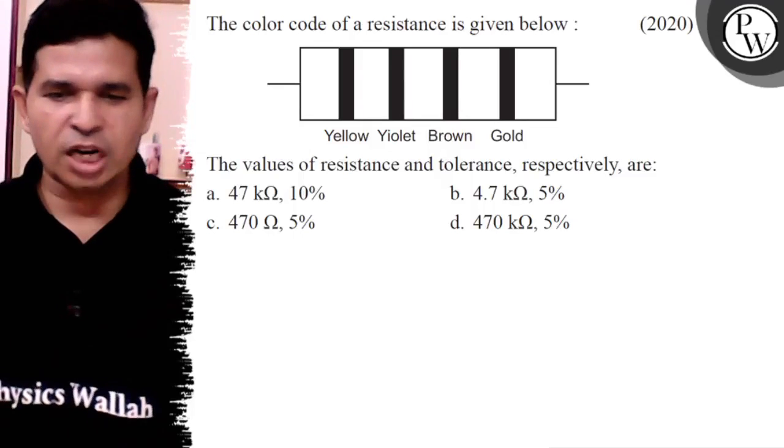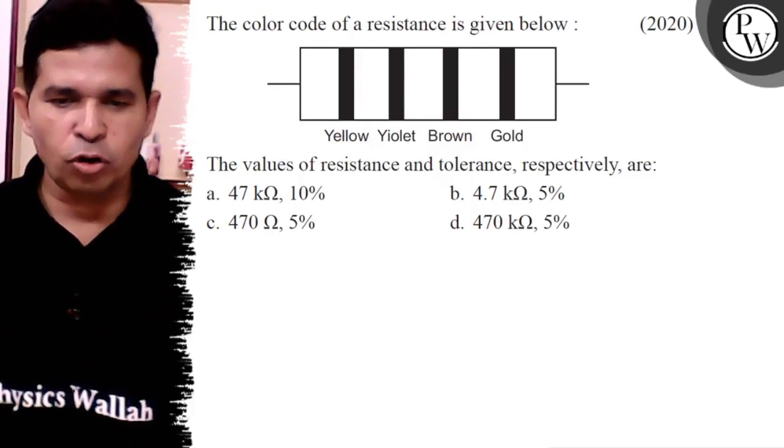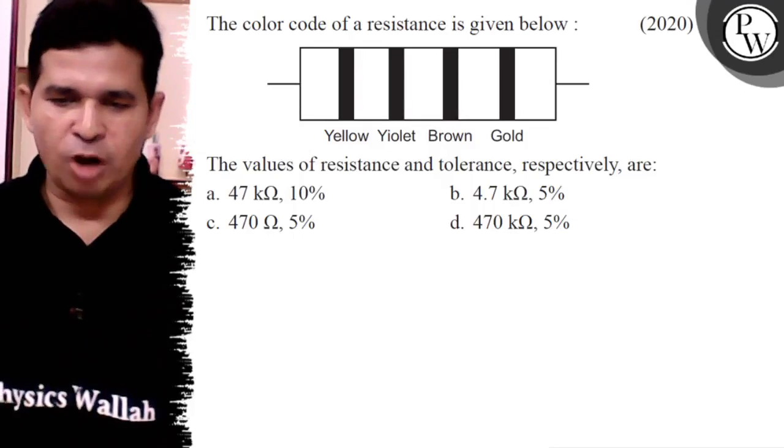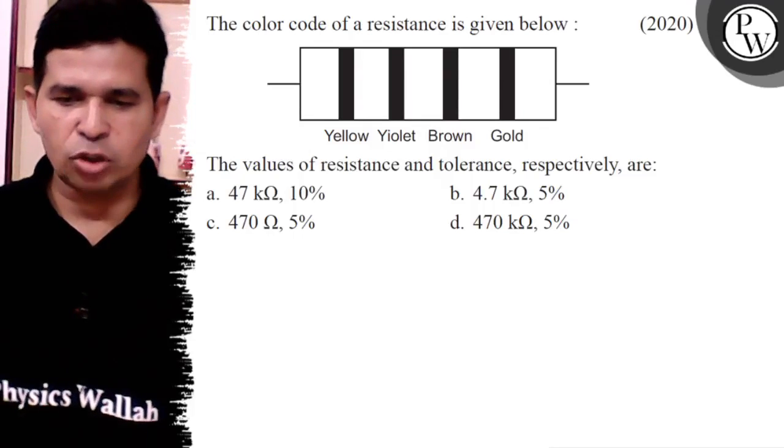Hello Bachchan, let us see this question. The color code of a resistance is given below: yellow, violet, brown, gold. The value of resistance and tolerance respectively.